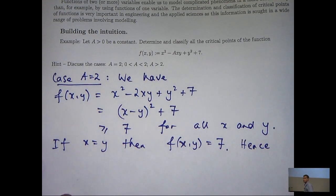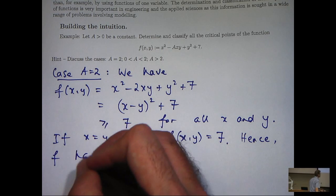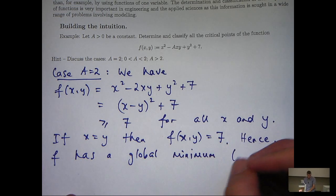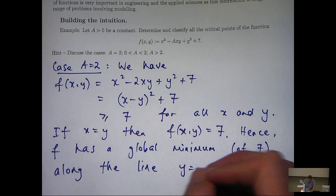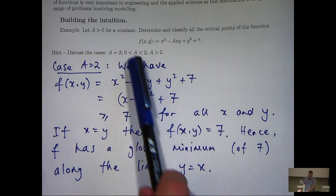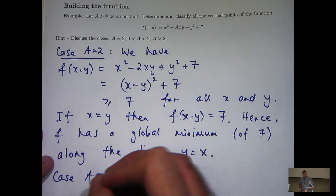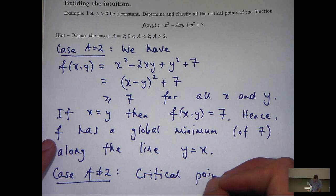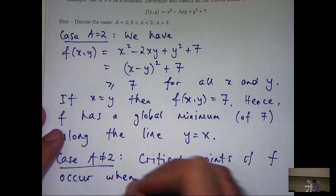Now notice I didn't use any derivatives or any second derivative test there, I just used basic manipulation. Okay, so that's the case a equals two. Now for these cases, we're going to use the standard calculus approach and involve the so-called second derivative test. Let's rule out the case a equals two. The critical points of f occur when we set the partial derivatives equal to zero.